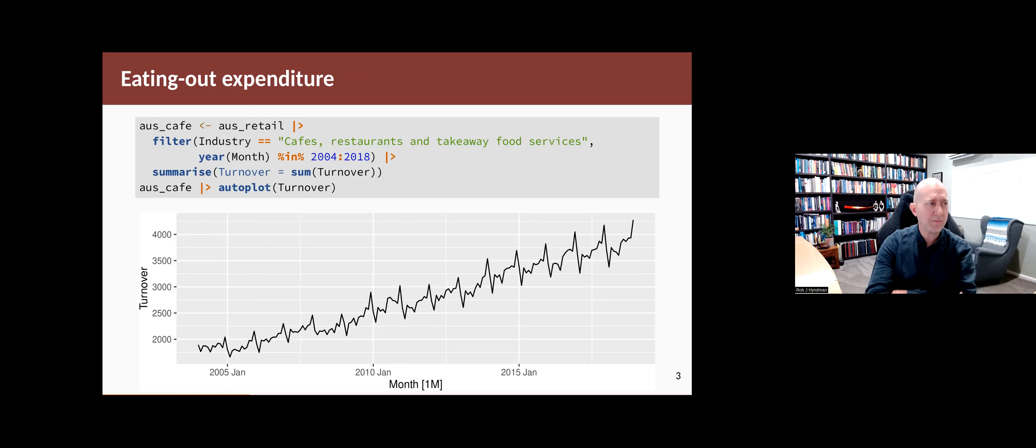Let's look at a couple of examples. So this one is a simple example. It's monthly data. Normally, you wouldn't use Fourier terms for monthly data because there's only 12 periods and you can easily handle that with other ways. But just to show how it works, we're going to start with an example with monthly data. So this is expenditure on cafes, restaurants and takeaway food services in Australia every month between 2004 and 2018.